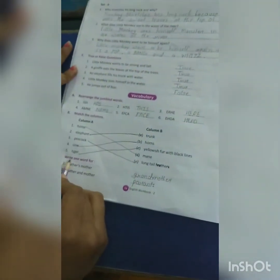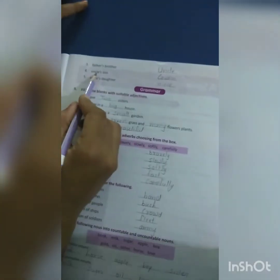Exercise number C: Write one word for father's mother - grandmother, father and mother - parents, father's brother - uncle, uncle's son - cousin, sister's daughter - niece.